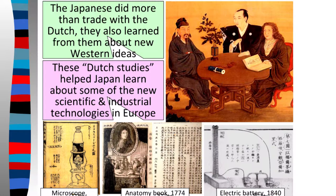While they were trading with the Dutch, they also learned about new Western ideas. These different Dutch studies helped Japan learn about some of the new scientific and industrial technologies in Europe. So it's not like they were completely in the dark — they had a tiny bit of information from the Dutch — but it still wasn't that much, and for the most part Japan was isolated while the rest of Asia was becoming more and more imperialized by Western Europe.